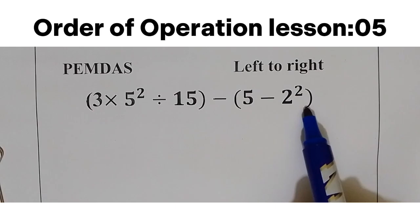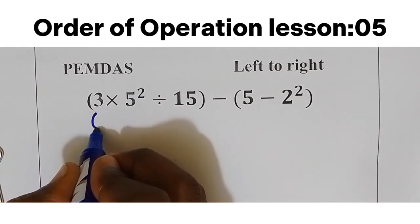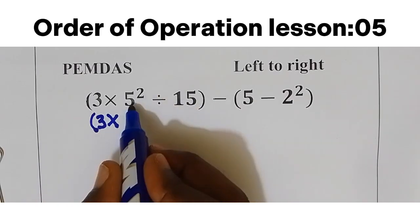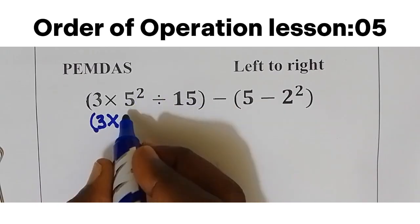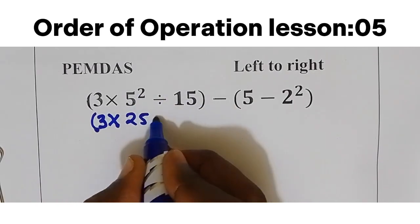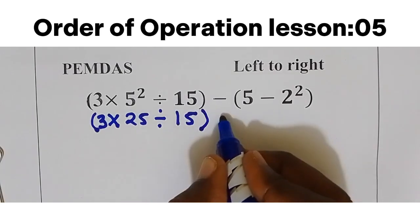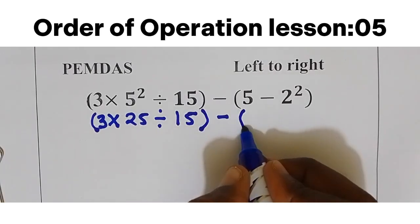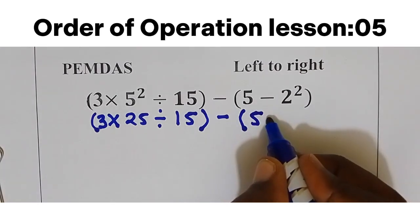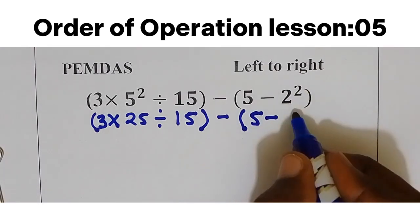And in the second parentheses I'm going to work on 2 square. We have parentheses: 3 multiply by 5 square, it is 25, then divide by 15, in the parentheses take away, in the parentheses 5 minus 2 square, it is 4.